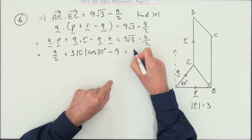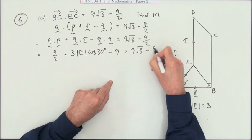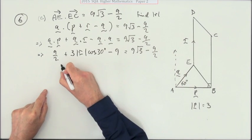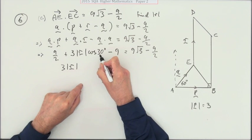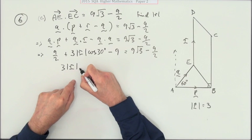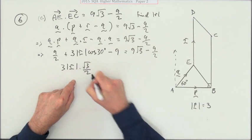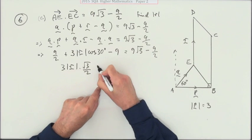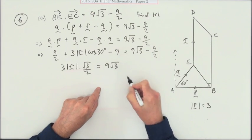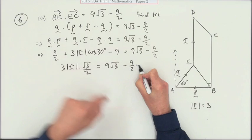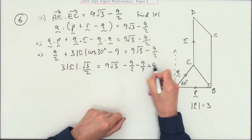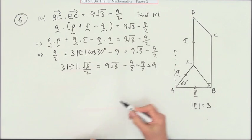3 times 3 equals 9 root 3 minus 9 upon 2. Now let's just sort this out a bit. We've got 3 times the magnitude of r times—now the cosine of 30 is root 3 upon 2—so times root 3 upon 2. We've got, and we'll just put this on this side, equals 9 root 3. Now there's a minus 9 upon 2 minus another 9 upon 2, but plus a 9. That lot comes to: minus 9 plus 9 disappears.